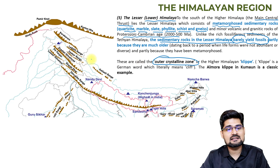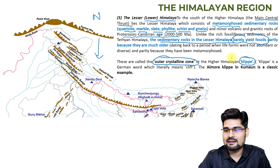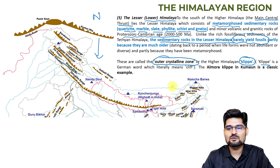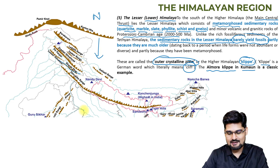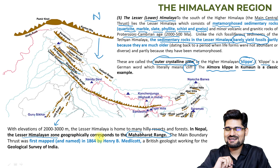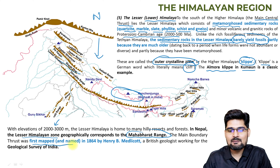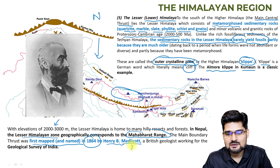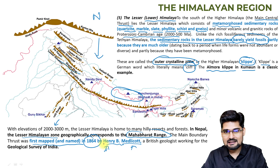In the Lesser Himalaya, the term 'Klippe' is used — a German word meaning cliff. Almora Klippe or Kumaon is a very famous example. Elevations are roughly 2,000 to 3,000 meters. In Nepal, the Lesser Himalayan zone corresponds to the Mahabharata Range. The Main Boundary Thrust was first mapped and named in 1864 by Henry B. Medlicott, who deserves credit for this particular term.